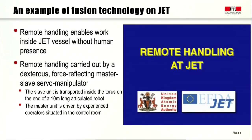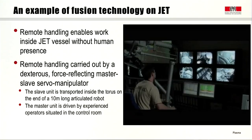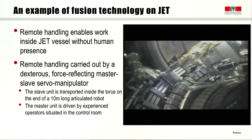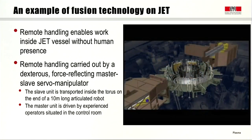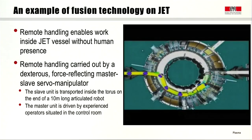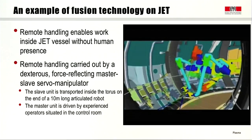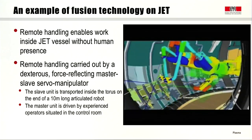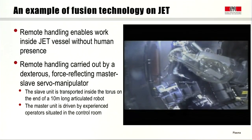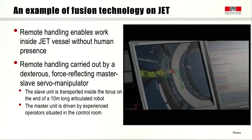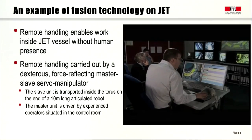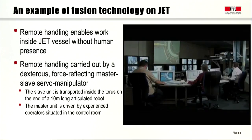JET is an experiment about fusion physics but also about technologies. One key technology is remote handling, which enables work inside the JET vessel without human presence. Remote handling is carried out by a dexterous force-reflecting master-slave servo manipulator. The slave unit is transported inside the torus on the head of a 10-meter long articulated robot, while the master unit is driven by experienced operators in the control room. A video shows remote handling operations in JET, with a focus on the installation of TAE antennas used to drive and detect Alfvén eigenmodes — antennas designed and built at CRPP in Lausanne.